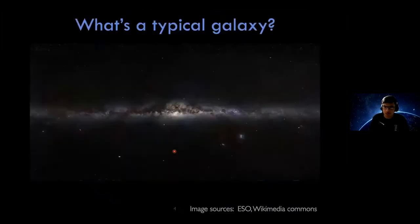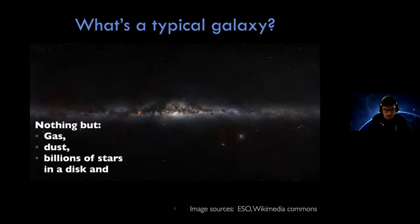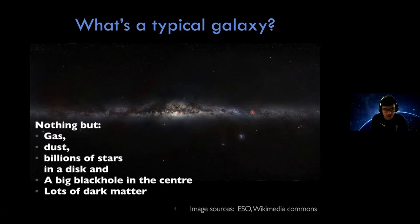What is a typical galaxy made up of? In this picture of the Milky Way you see lots of bright things which are stars, and dark patches which are dust. Stars are basically made up of gas, so a typical galaxy is made up of gas, dust, and billions of stars in a disk — it's all very flat and circular. Most galaxies also have a big black hole in the center.